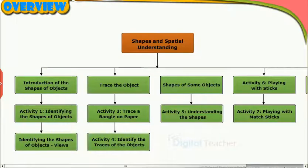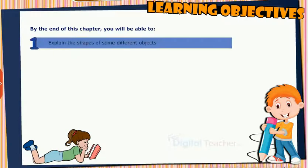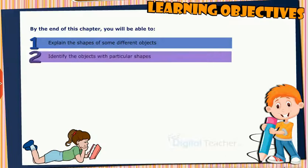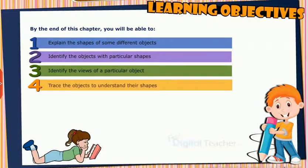This slide presents the overview of the chapter. By the end of this chapter, you will be able to: explain the shapes of some different objects, identify the objects with particular shapes, identify the views of a particular object, and trace the objects to understand their shapes.